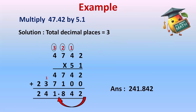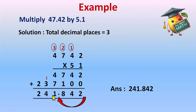241.842 is the answer. So likewise, whenever you have to multiply any two decimal numbers, first do the multiplication without the decimal, and then just count the decimal places and place the decimal after that many digits — whatever the decimal places are in the question.